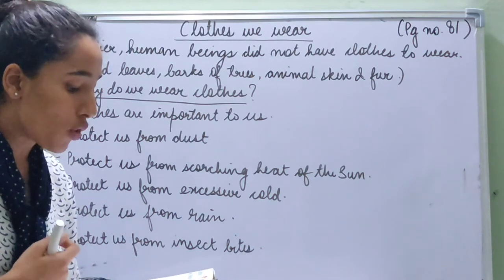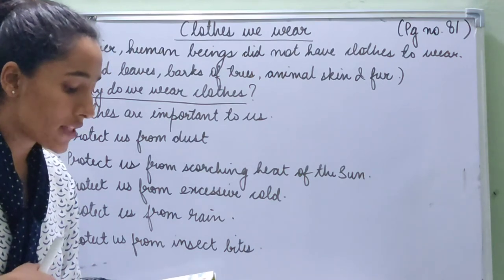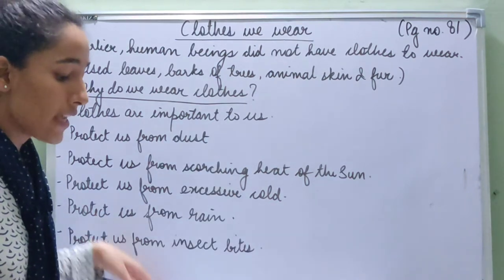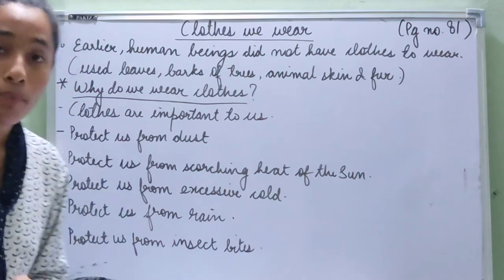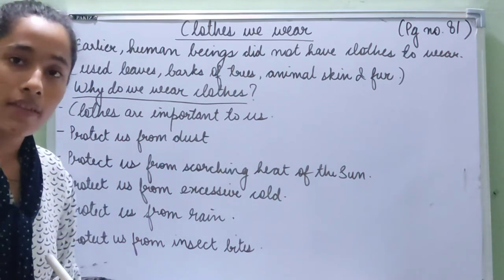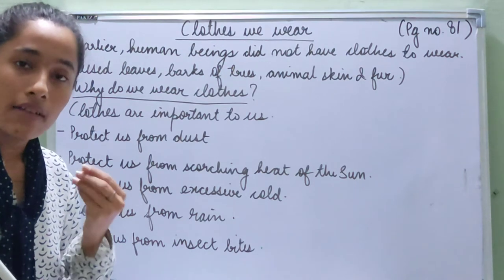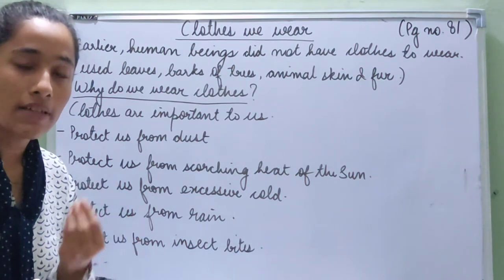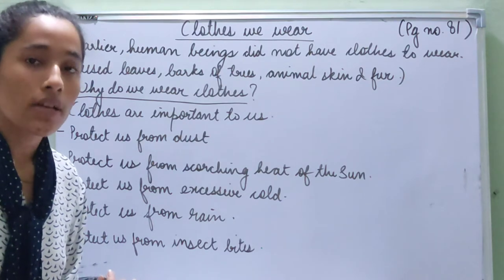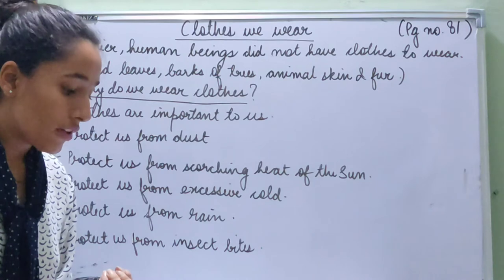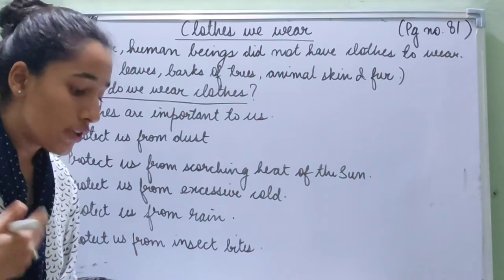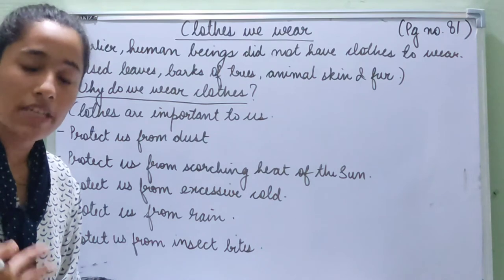Question two: Are all clothes made from the same type of material? For example, the uniform you wear in summer — is its material the same as the one you wear during winter? No, it is not. Different clothes have different kinds of materials. So write: no, all clothes are not made of the same type of material.